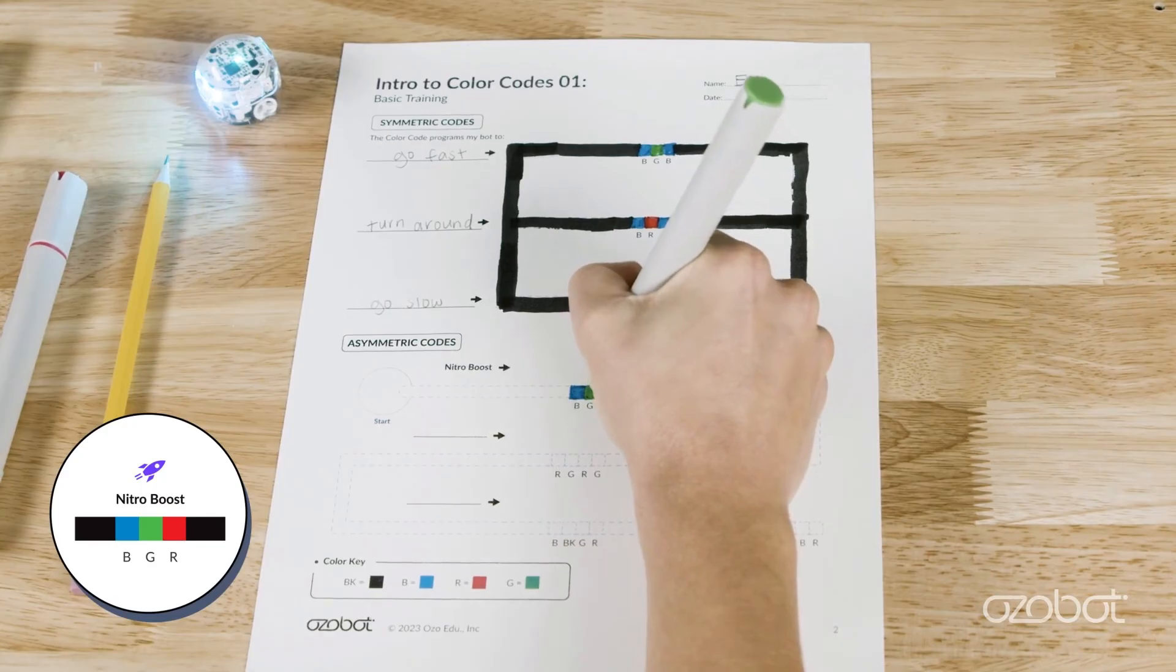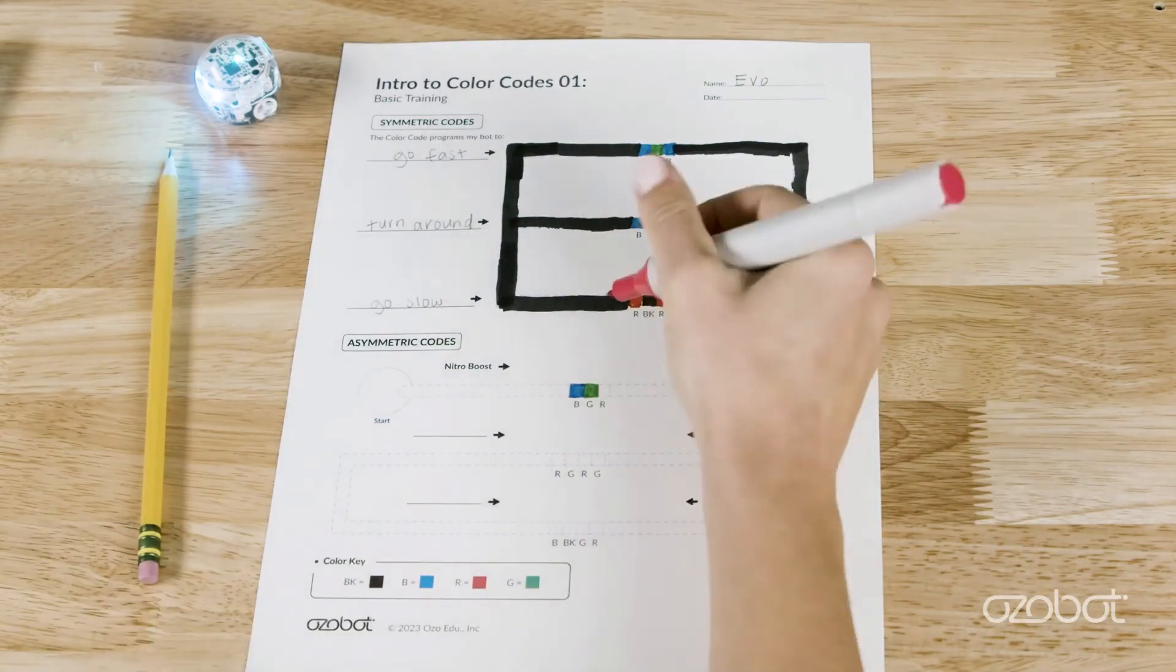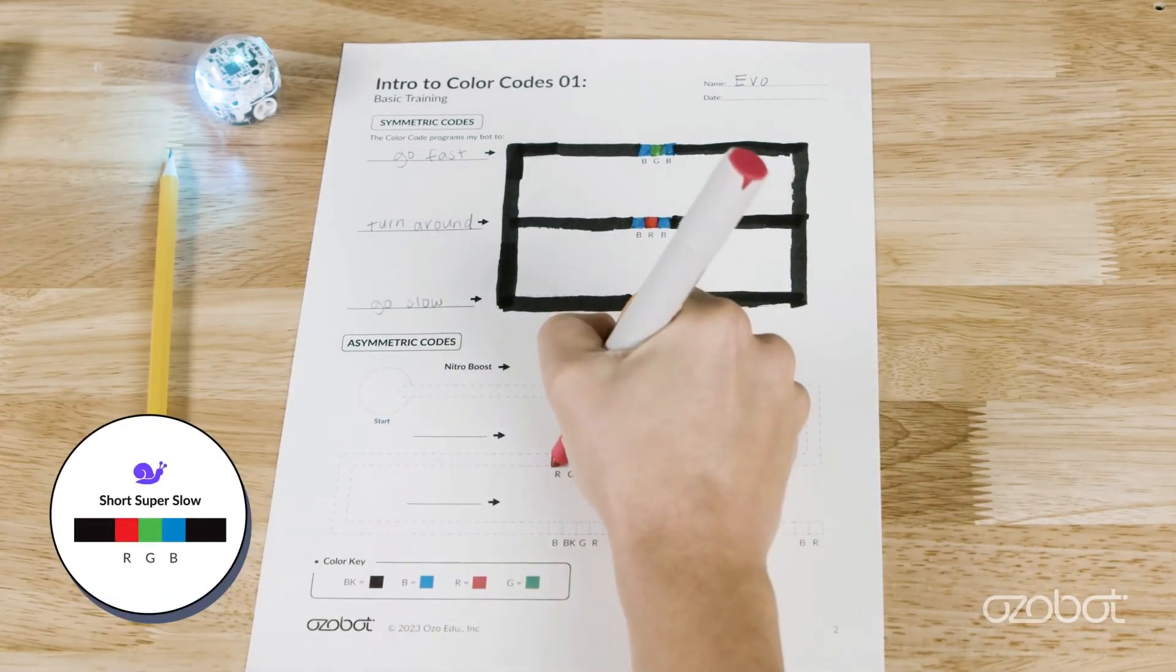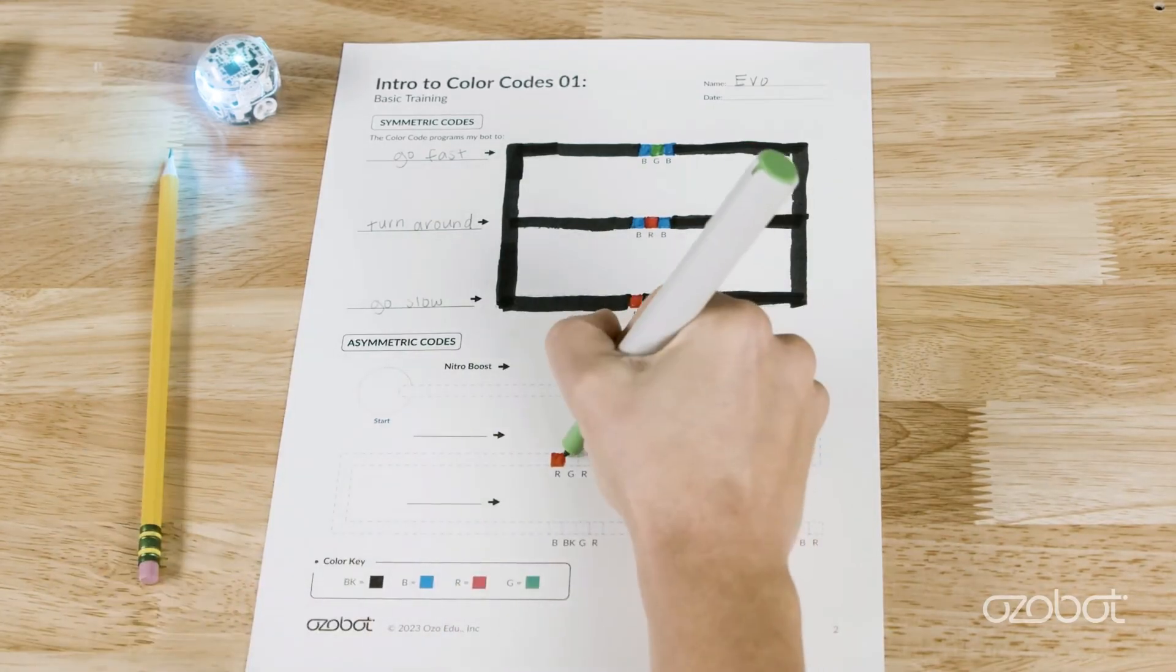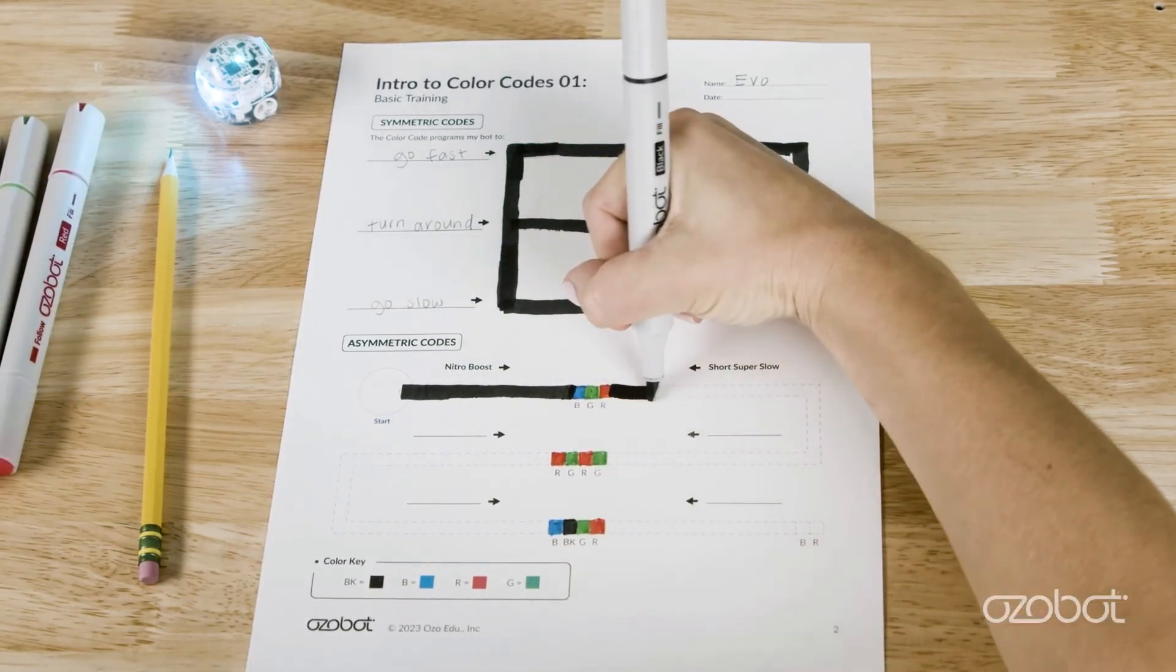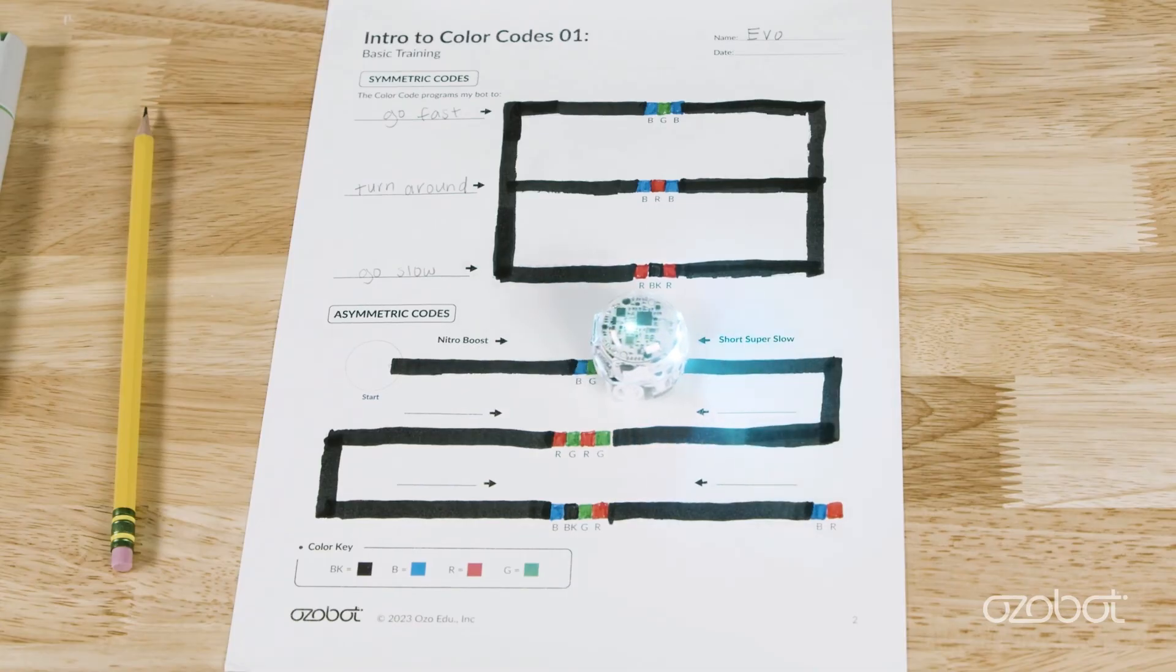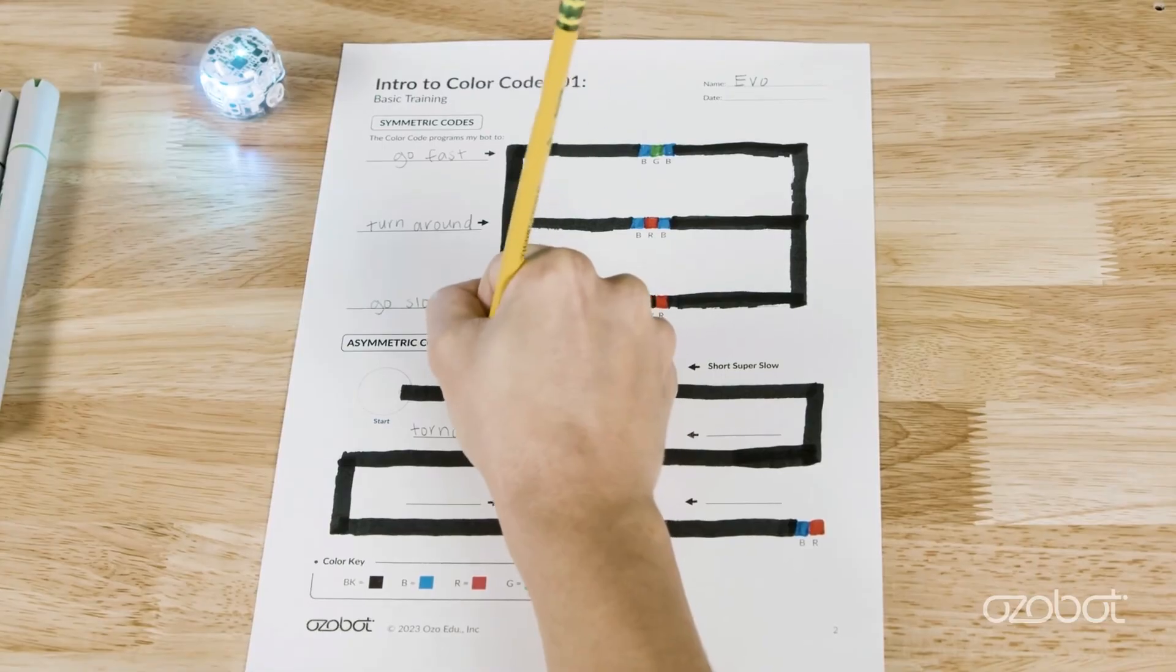If the bot is traveling over the color code in the opposite direction it will read the color code as red green blue which is a different color code called short super slow which programs your bot to go very slow for three seconds. Fill in the color codes using the color key and complete the line that connects the color codes with black markers. Place the bot on start and watch the actions as it travels a different direction over each code. Then find the codes on a color code chart and fill in the missing names of each color code.